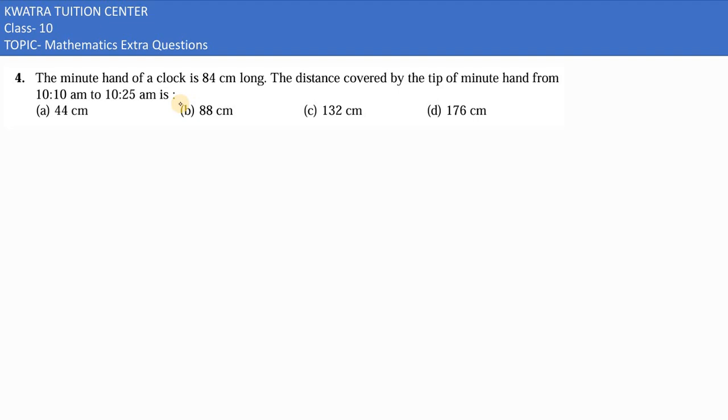The next problem says the minute hand of a clock is 84 centimeter long. The minute hand of a clock is 84 centimeter, that would be behaving as the radius of the clock. They are saying 10:10 am to 10:25 am, the distance covered. So that means it is sweeping a sector, one sector.